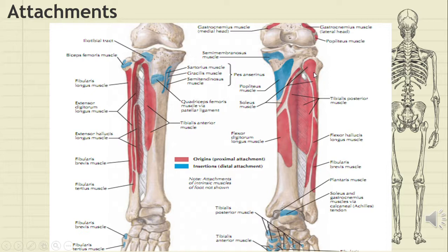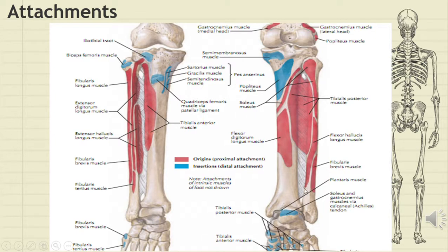Posteriorly, other than tibialis posterior and flexor digitorum longus, the muscles arising from fibula include soleus in the upper part from the posterior aspect of the head and the posterior part of the lateral posterior surface, then below that is the origin of flexor hallucis longus, and fibularis brevis origin also extends onto this posterior surface. On the medial border there is attachment of the interosseous membrane. There is also capsular attachment on the margin of the head facet, a ligament forming the syndesmosis of the inferior tibiofibular joint, and associated ligaments of the ankle and knee joints which will be discussed with the joints.